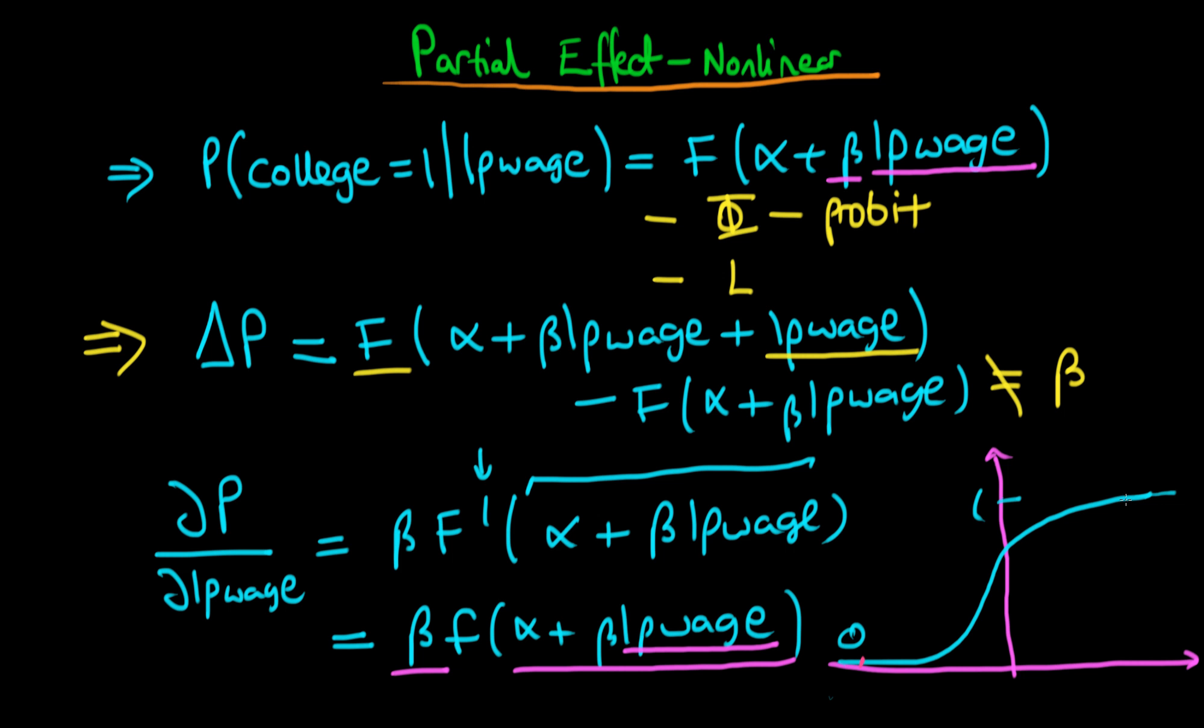Similarly, when parental wages are really high, there's also not much incremental effect on probability from a one unit change in the log of parental wages. And you can sort of think about once you reach a certain level of wage, perhaps these changes really don't matter too much in terms of the chance that your kids go to college.